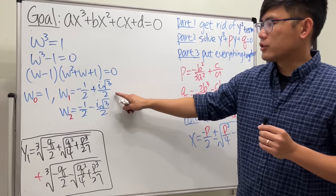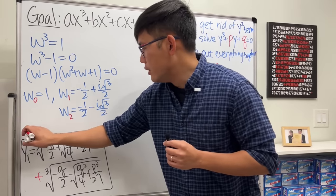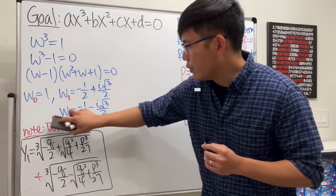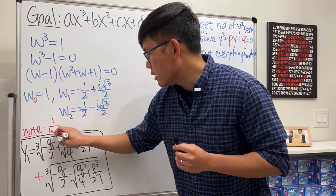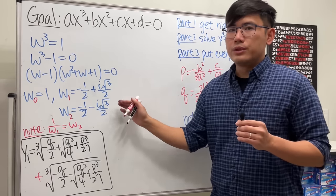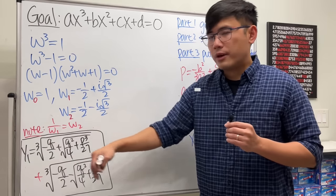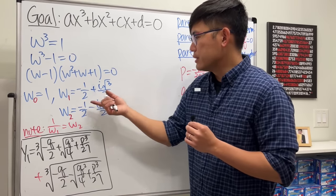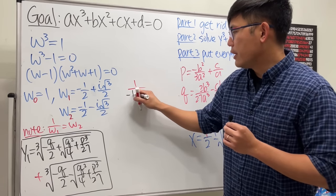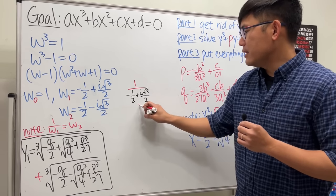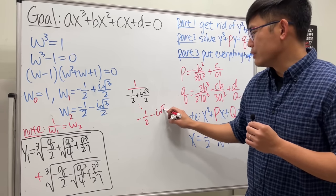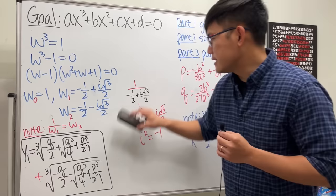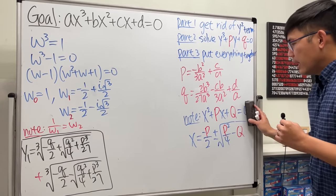There's a connection between ω₁ and ω₂: 1/ω₁ = ω₂. The simplest way to see this is to convert to polar form — taking the reciprocal just negates the angle. Alternatively, you can compute 1/(−1/2 + i√3/2) and simplify to get −1/2 − i√3/2, using i² = −1. So that is all verified.